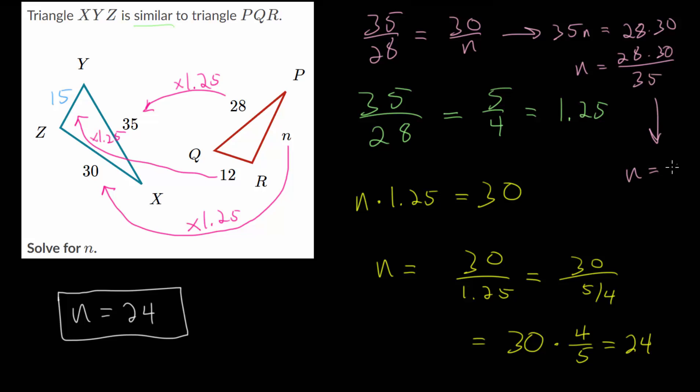And we would find that n is 24 once everything is simplified. Since notice, we have 28 over 35, which is four-fifths. And four-fifths times 30 is 24.